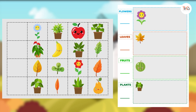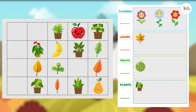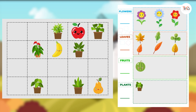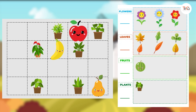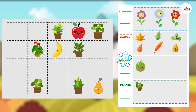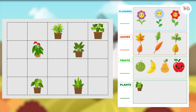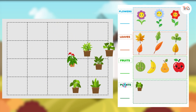So just put flowers into the flower group, leaves into the leaf group, fruits into the fruit group, and plants into the plant group.